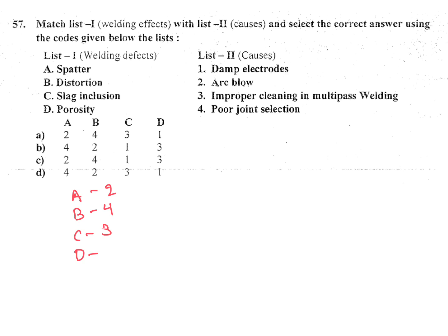Remaining D is 1, porosity damp electrodes it will come like bubble structure, it will come porosity. So 2, 4, 3, 1. 2, 4, 3, 1. A is the answer for question 57.